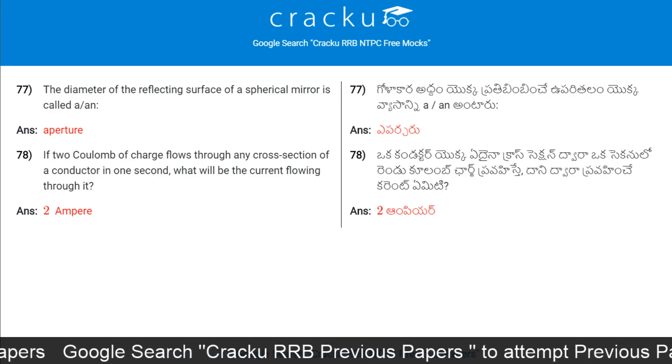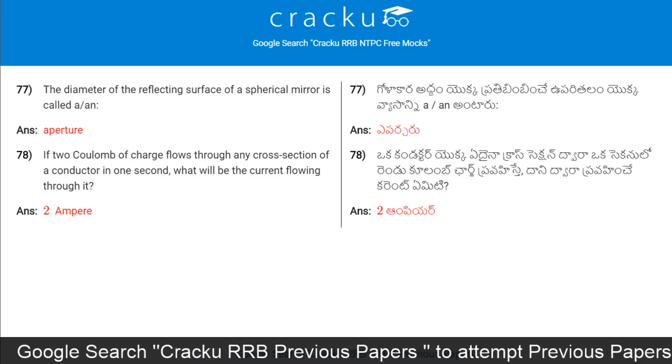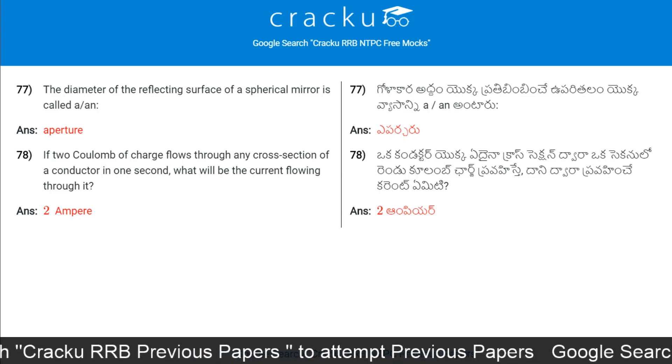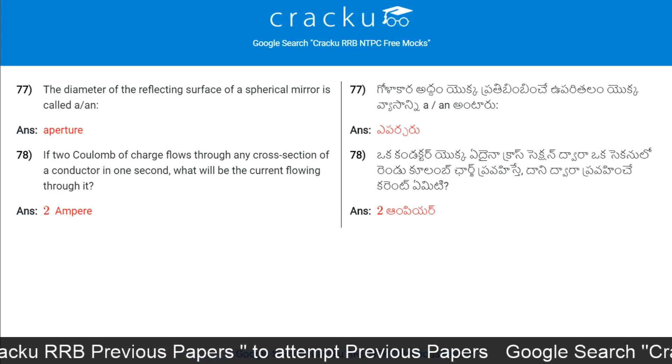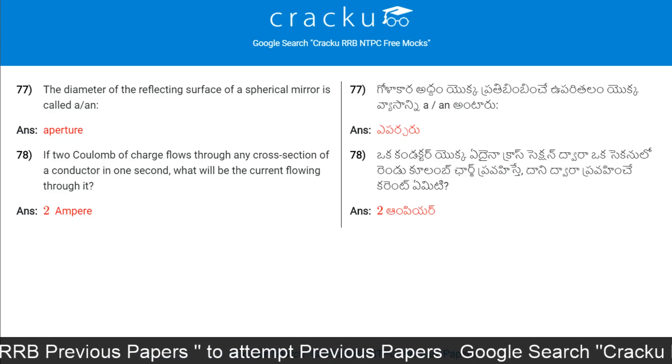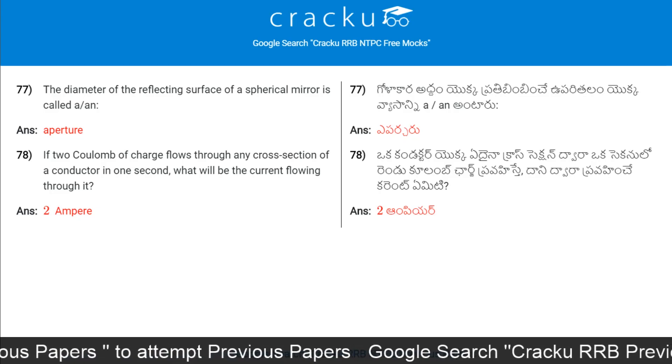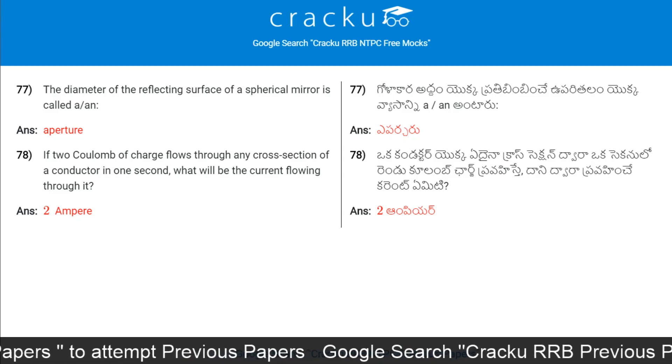If two coulombs of charge flows through any cross-section of a conductor in one second, what will be the current flowing through it? Two amperes.